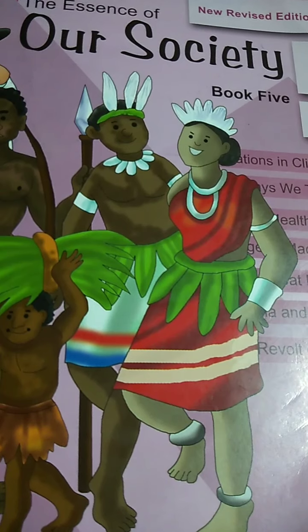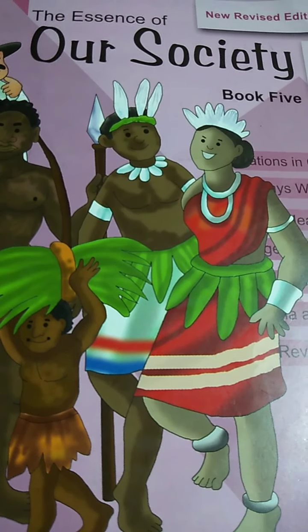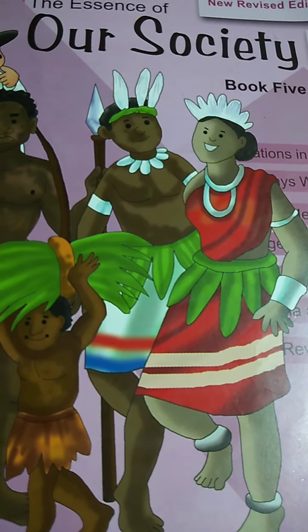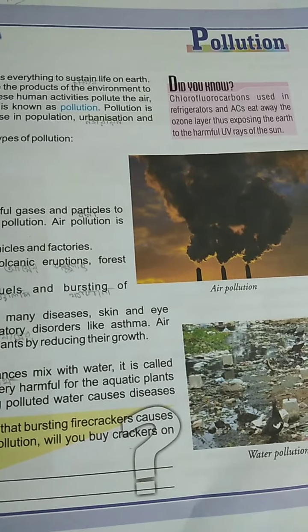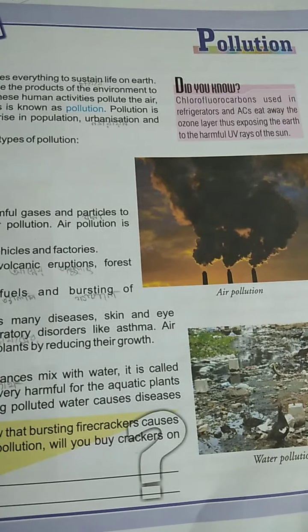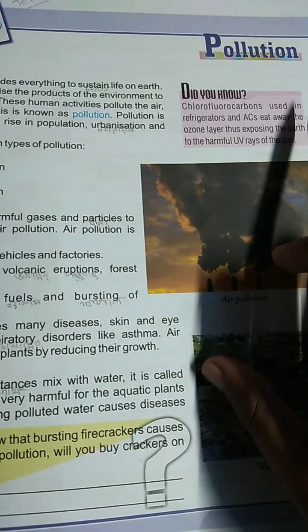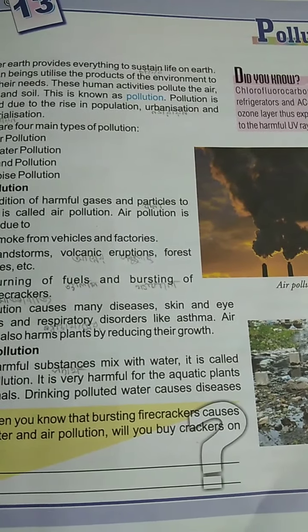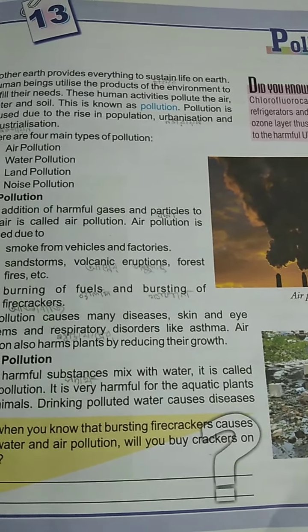Today we will start term two. Our term one exam went very well, so now we will start preparing for term two. Let's start our next chapter. Open your book, students. You can see I have opened the chapter — this is our first chapter for term two. The chapter name is Pollution, which means 'Dhushan'. We will start the pollution chapter. As we all know, the water we use is polluted and the air around us is also polluted.